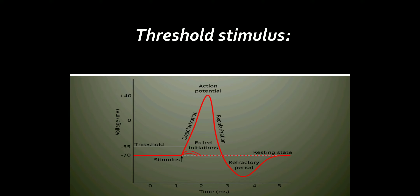Threshold stimulus: For a muscle fiber to contract, a certain minimum strength or intensity of stimulus is required. This is called the threshold stimulus.